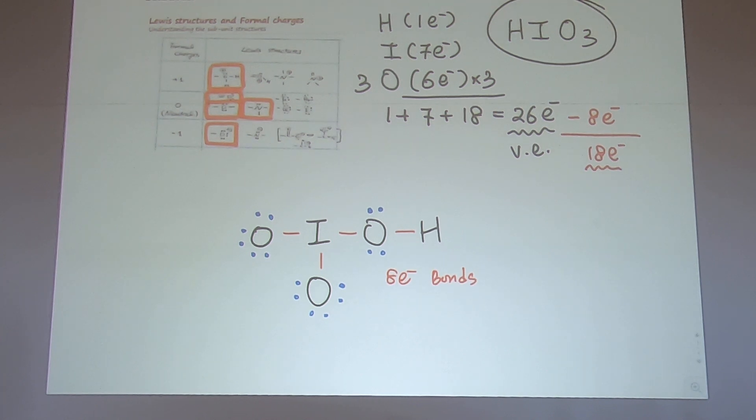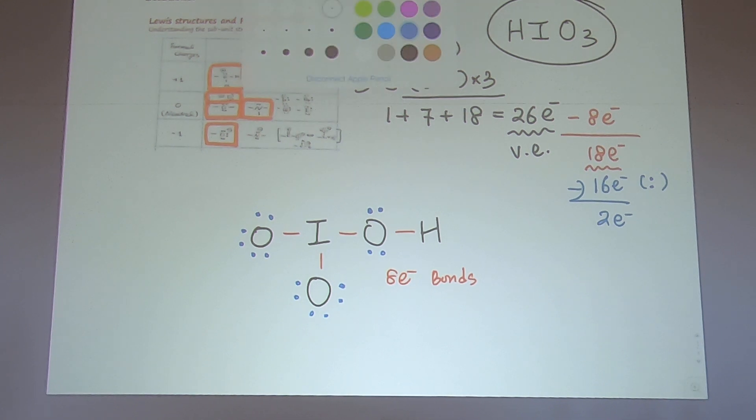Then how many dots did I use? Six, six, twelve, four, so 16. I used 16 electrons as dots, lone pair electrons essentially. These are the lone pair electrons I have used. How many do you have left? Two electrons. So I guess, where did this one go? There you go, right? So that's the last one that you do.